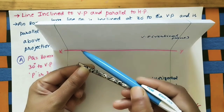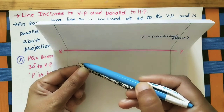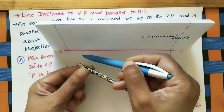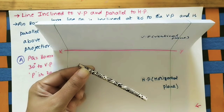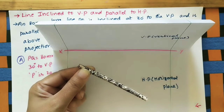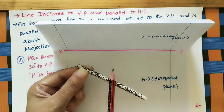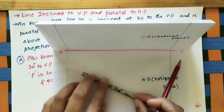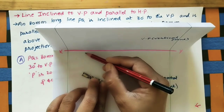Point P is 40 mm away from the vertical plane, so from the XY line, 40 mm away, we can see the entire true length in the top view. Always remember: first draw the true length of the line, whether in the front view or top view. In our case, the true length appears in the top view. Let us take this as 40 mm.